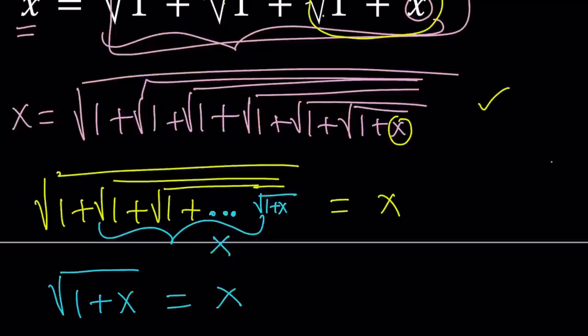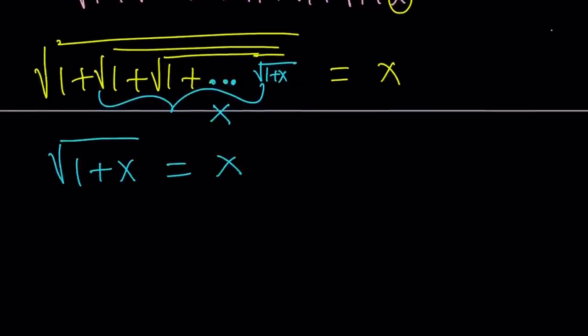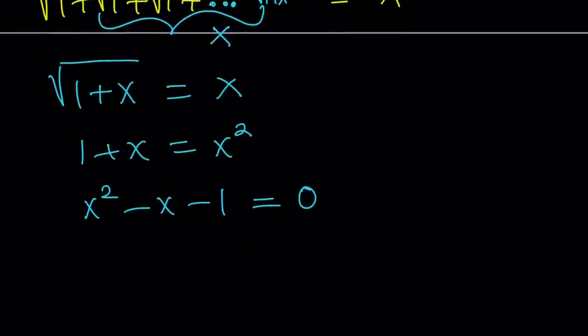So how do you solve this kind of equation? It's a radical equation, so normally you would just square both sides. Let's go ahead and do it. We get 1 plus x equals x squared. Now put everything on the same side, x squared minus x minus 1 equals 0. This is a quadratic equation.